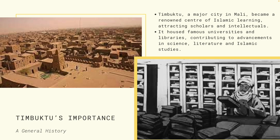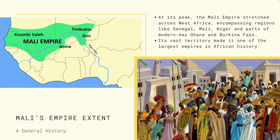The extent of the Mali Empire — as you can see — stretched into parts of Djenné, into the Sahel, and most of Timbuktu. At its peak, the Mali Empire stretched across West Africa, encompassing regions equivalent to today's Senegal, Mali, Niger, and parts of modern-day Ghana and Burkina Faso.